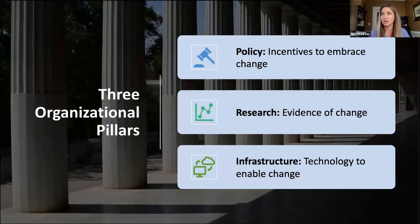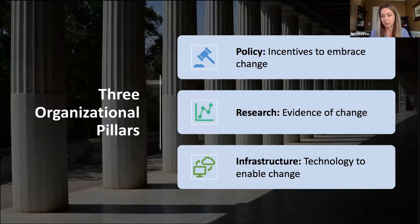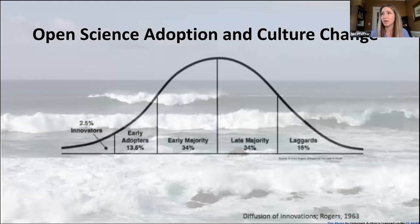That mission is an exciting one. We all enjoy spending our time every day advocating for open science and working towards a culture change. Our organization is built on three main pillars: policy, which develops incentives and policies to embrace change; research to gather the evidence of the change; and infrastructure, which is the technology to enable this change. As part of our mission, open science adoption and culture change is the end goal, and that's something we work on and monitor every day.